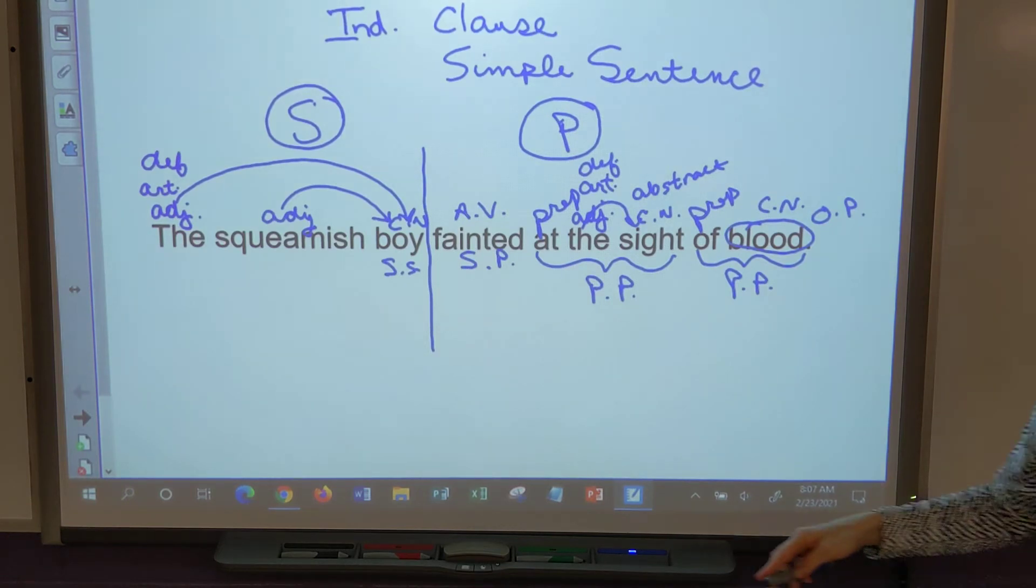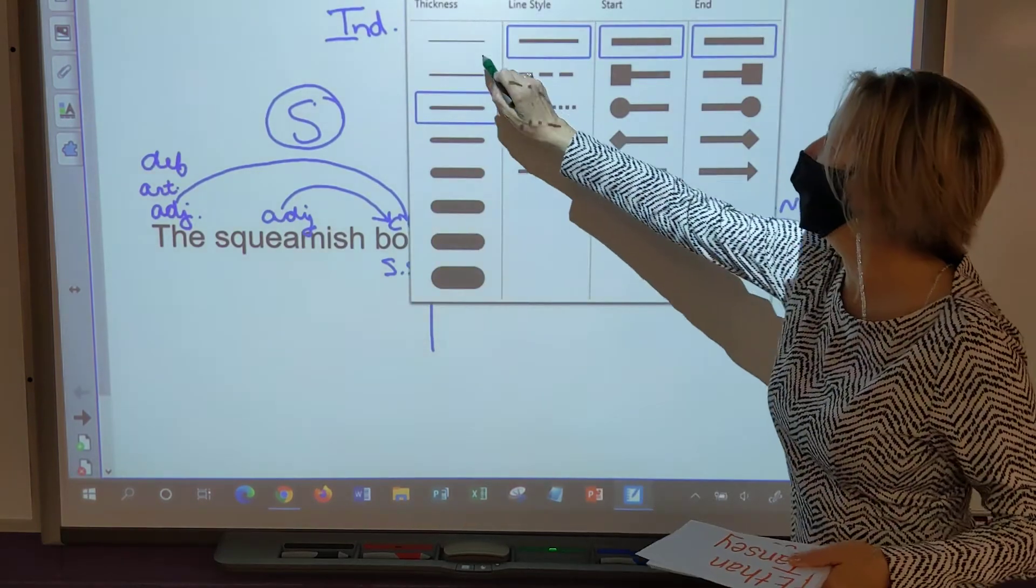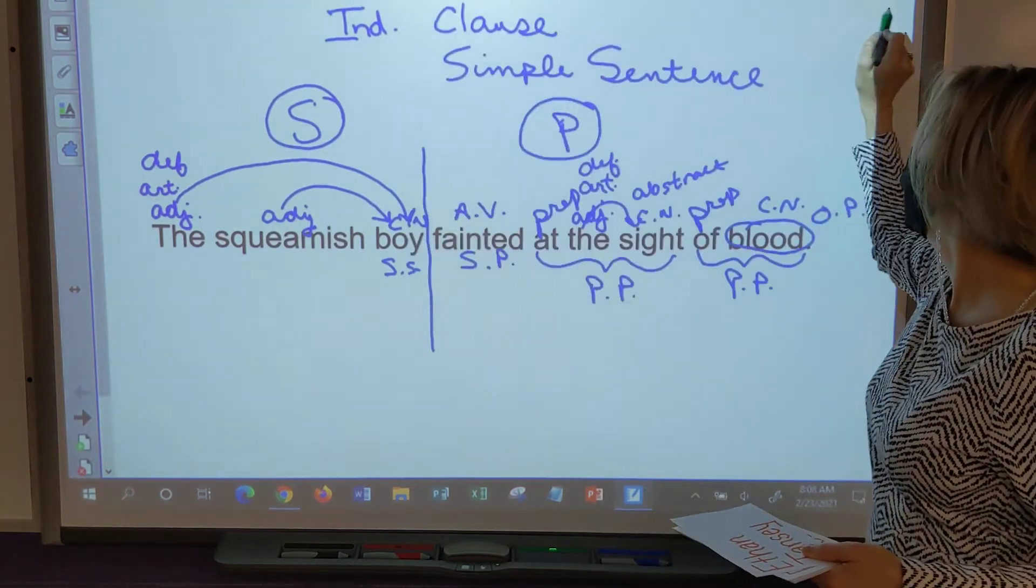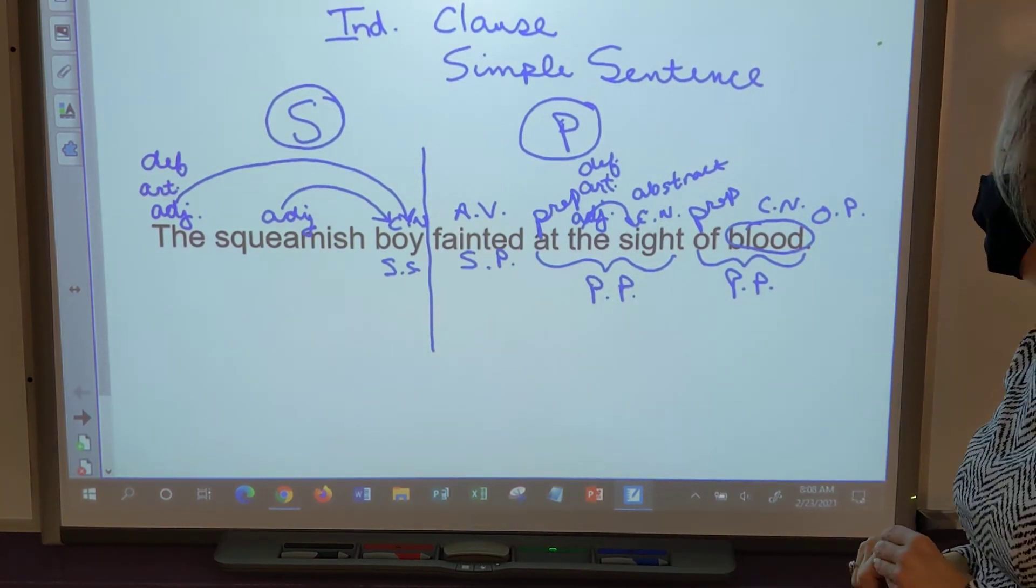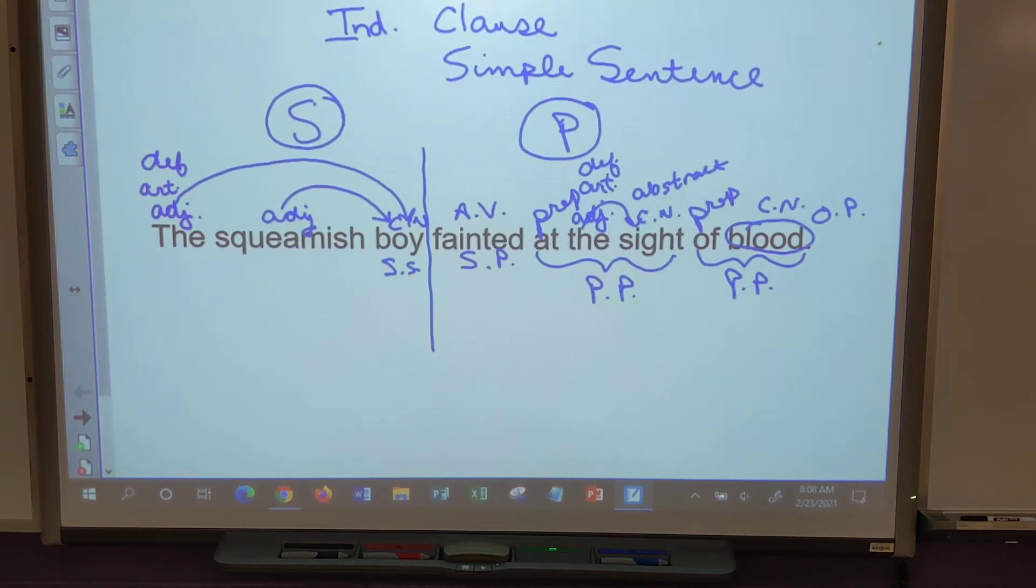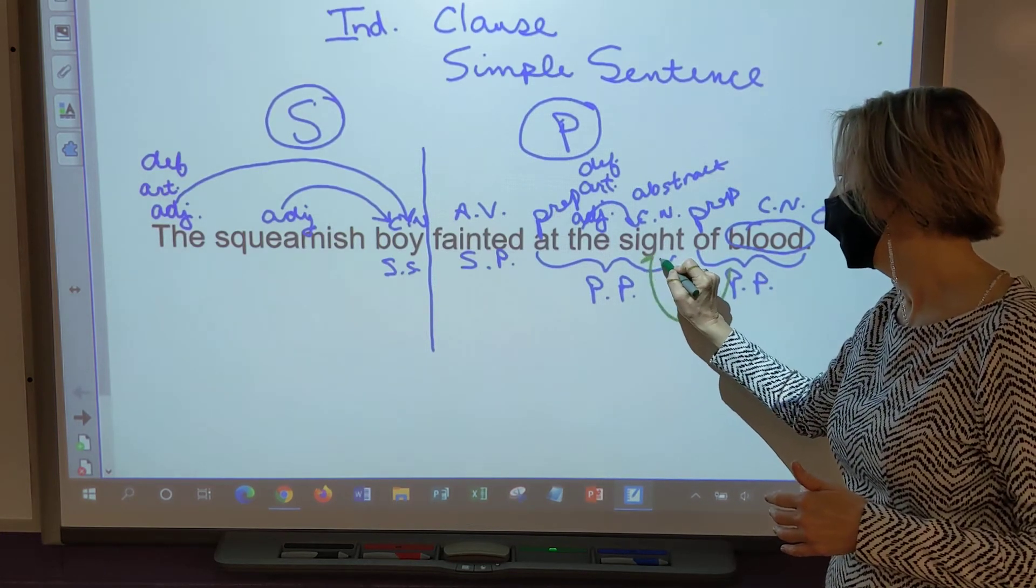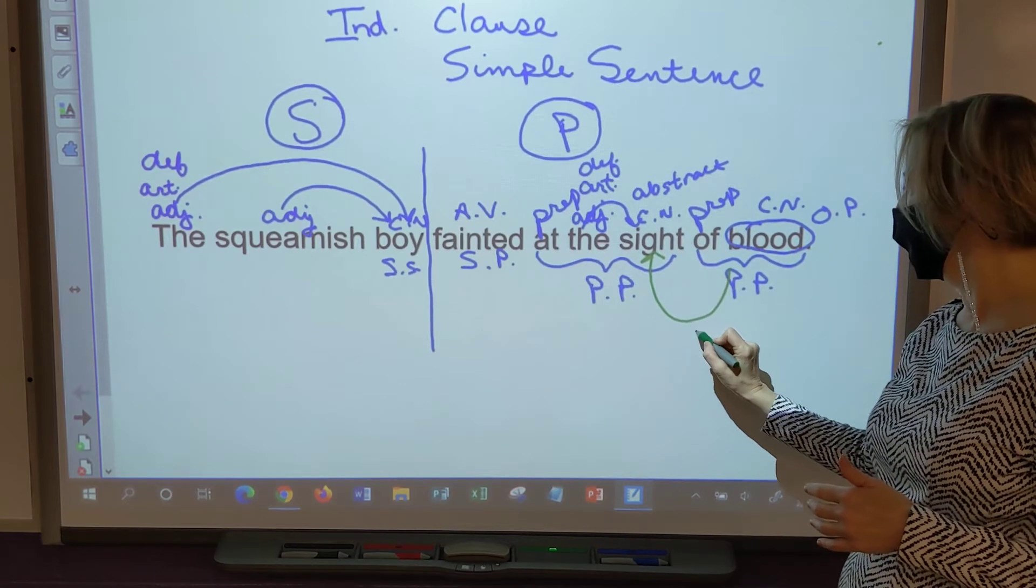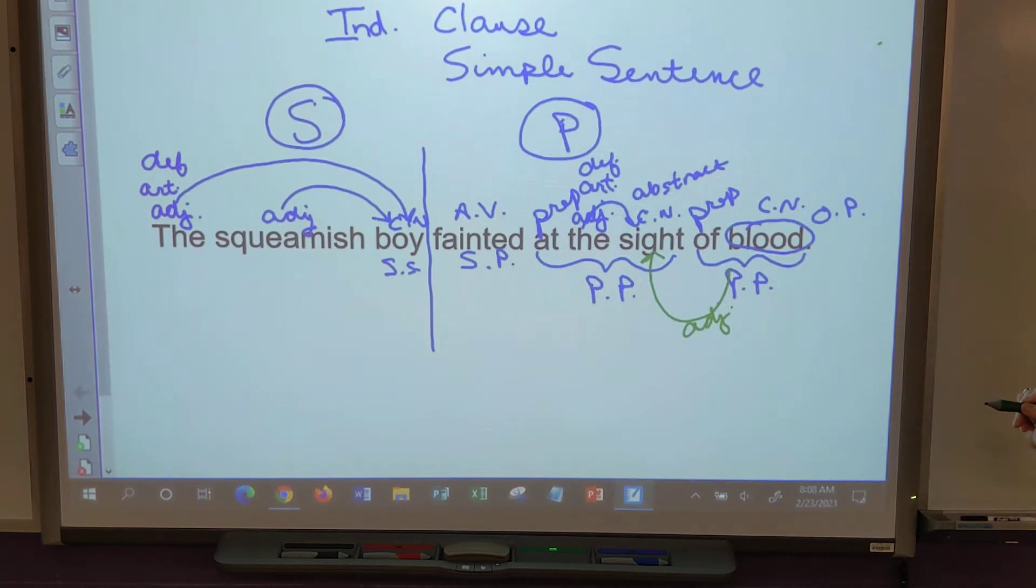All right, anything else? Does anybody see anything else we didn't do? Mia, of blood is an adjective phrase describing sight. Sight is a noun so therefore it is an adjective phrase.